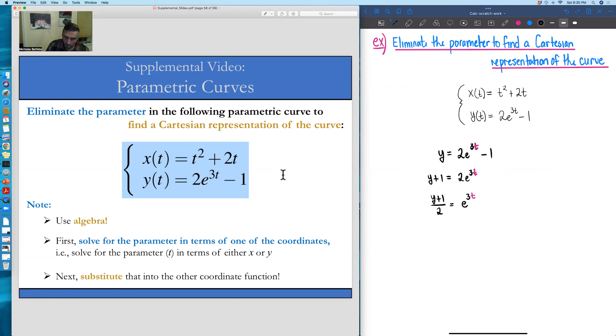Now, the next move that I'm going to make, we're not going to do anything mathematically different. I'm just going to switch sides. So I'm just going to rewrite this as e to the 3t is equal to y plus 1 all over 2.